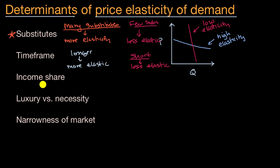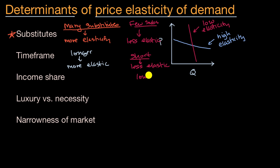Next: income share. Think about something that makes up a very small percentage of your income, say bubblegum at 25 cents. If it were to go to 50 cents, that would likely reduce quantity demanded, but it might not be so significant because going from 25 to 50 cents isn't going to make a big difference for most people's pocketbooks. In general, the lower the income share, the less elastic that market is going to be.